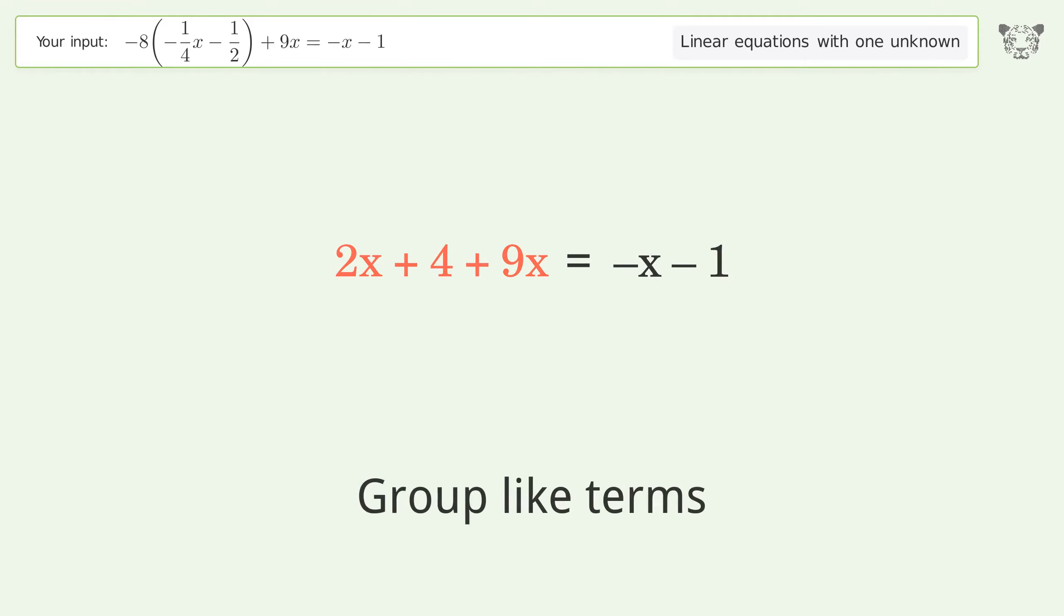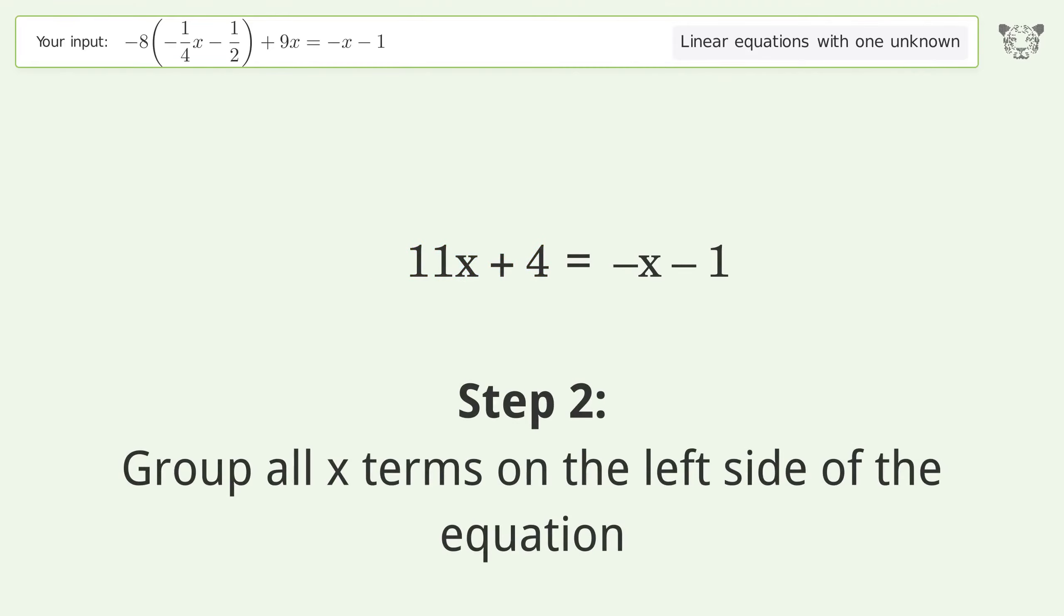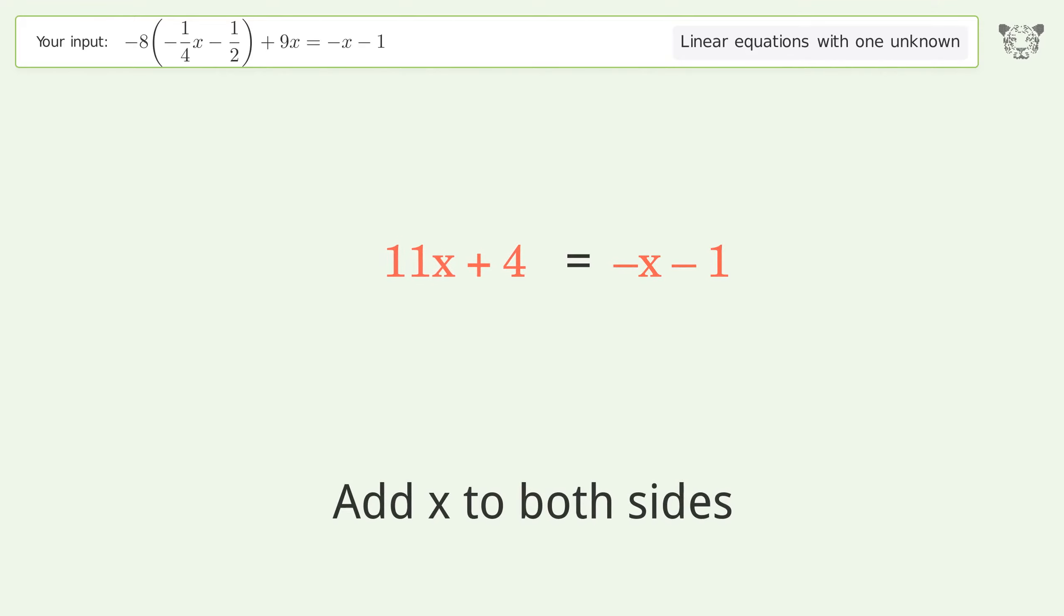Group like terms. Simplify the arithmetic. Group all x terms on the left side of the equation: add x to both sides. Group like terms. Simplify the arithmetic.